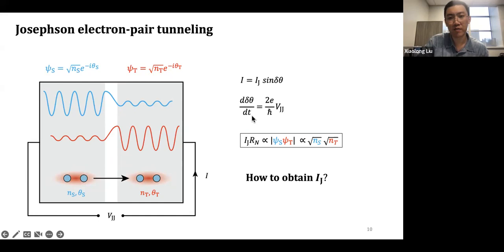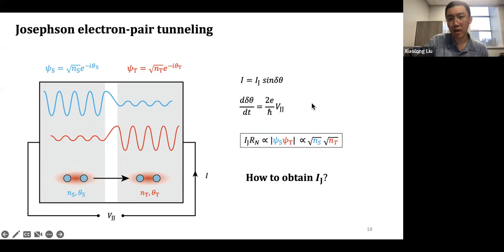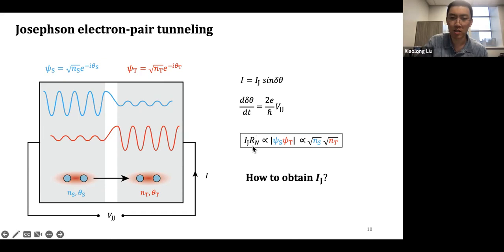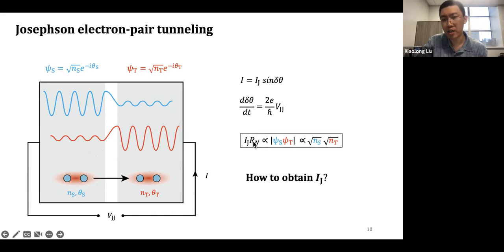What dominates the behavior of this Josephson junction is the phase difference and the amplitude I_J, which is the Josephson critical current. If the phase across the junction is Δθ, your current is given by the Josephson equation. This phase difference Δθ can evolve with time if the junction has a non-zero voltage V_JJ: if V_JJ is non-zero, Δθ will begin to evolve with time. Your current through the junction will actually evolve with time. Coming from the Ambegaokar-Baratoff relationship, the critical Josephson current multiplied by R_N — the junction resistance in the normal state — is proportional to the square root of the superfluid density product of sample and tip.